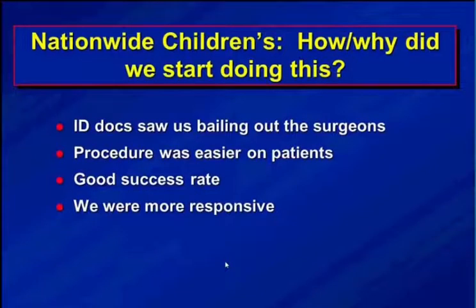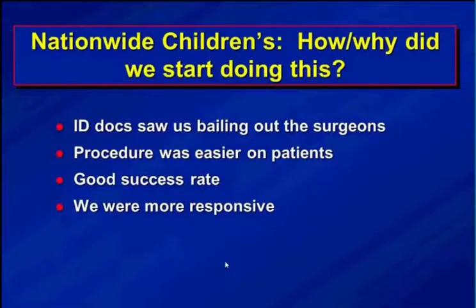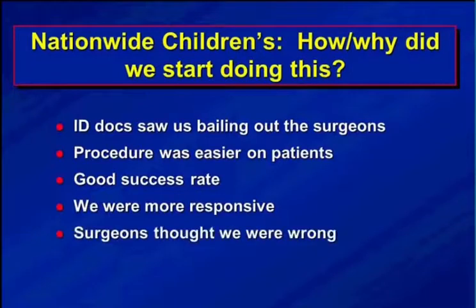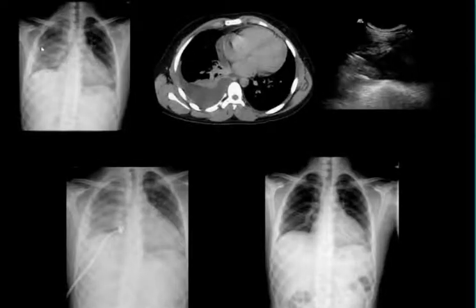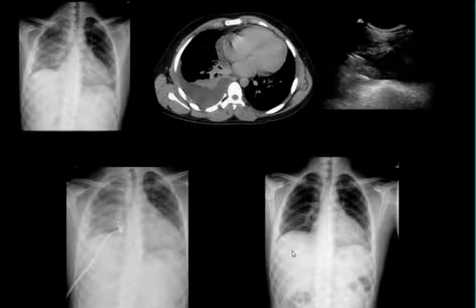How did that evolve? The Infectious Disease docs saw that when surgeons failed, we did it — but our procedure was easier, just as successful, and we were more responsive. When they called, surgeons would say 'I'll get to it in a day or two,' and we'd say 'when can you get the patient down?' By doing that, we got the patients, they saw how well it worked, and we took it over. We put a drain in under chest X-ray guidance, the pleural space clears, and the patient looks better — it works very well.